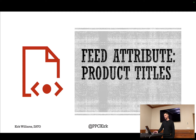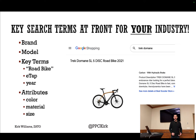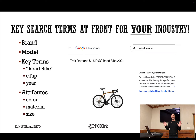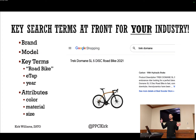Let's talk about feed attributes and product titles. As you think about product titles, you're trying to do two things: you are trying to get clicks from real people, and you're also trying to communicate to the algorithm what you value and what's really important for what your users are searching for.